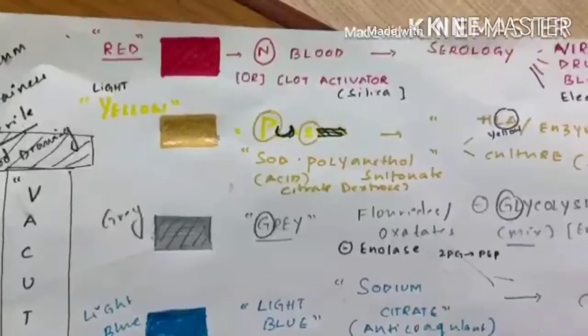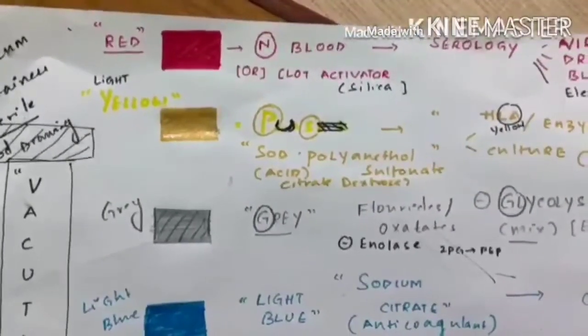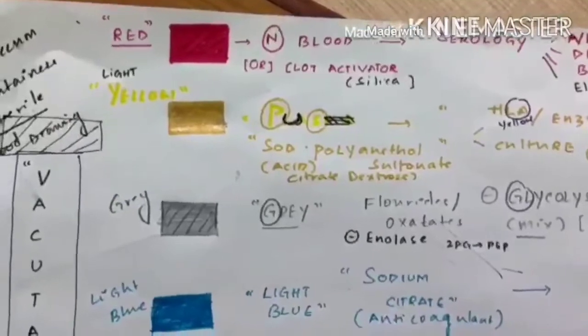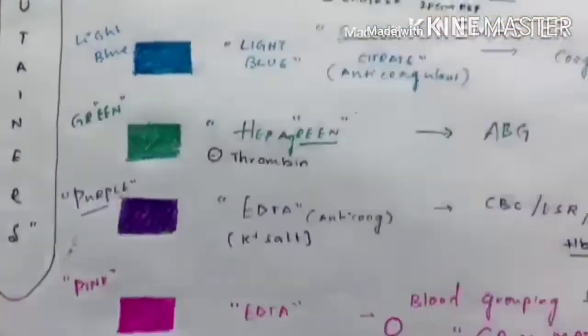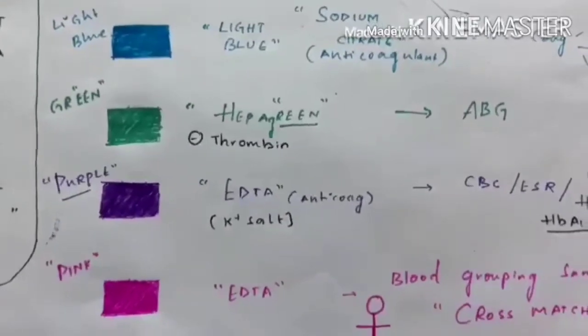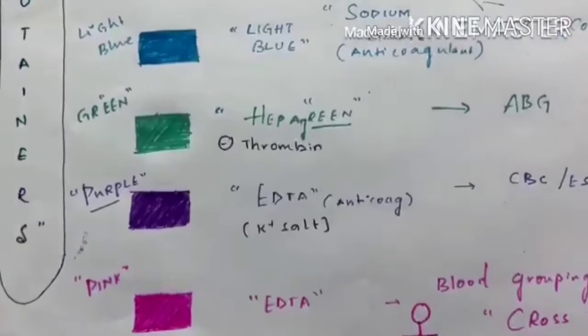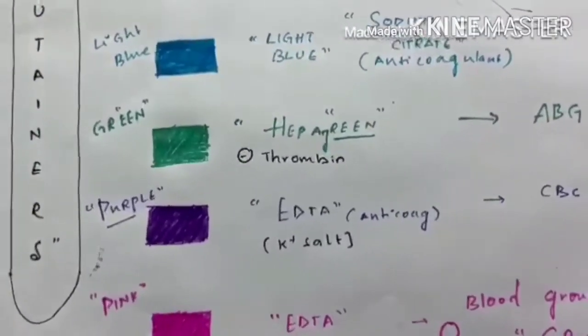So till now we studied red, yellow and grey. We divide these three into one group. And the other group is bottles containing anticoagulants: light blue, green, purple and pink. So coming to the bottles containing anticoagulants.